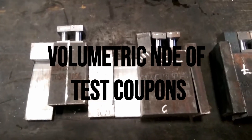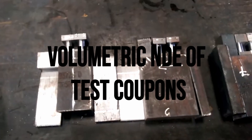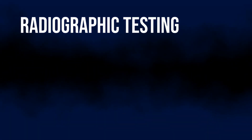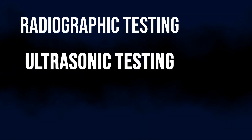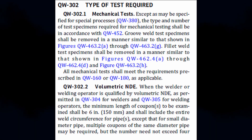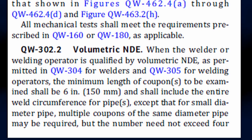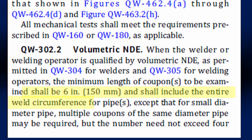Volumetric NDE of test coupons can be done by either radiographic examination or by ultrasonic testing. According to QW-302.2, volumetric NDE must have a minimum coupon length of 150 mm and shall include the entire weld circumference of the pipe.